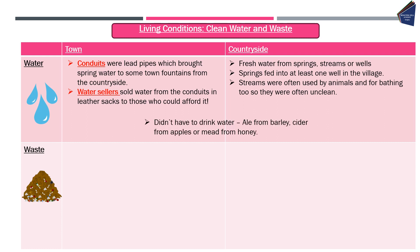It is worth noting that people didn't have to drink water — many simply drank alcohol instead, such as ale made from barley, cider from apples, or mead from honey. All of these would have been heated, which would have killed off bacteria. People didn't realise that was a benefit they were gaining, but drinking these was actually safer than drinking the water at the time.